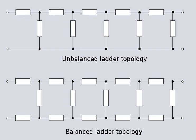Strictly speaking, replacing a component with one of an entirely different type is still the same topology. In some contexts, however, these can loosely be described as different topologies. For instance, interchanging inductors and capacitors in a low-pass filter results in a high-pass filter. These might be described as high-pass and low-pass topologies even though the network topology is identical.